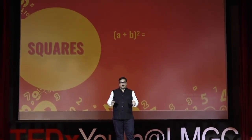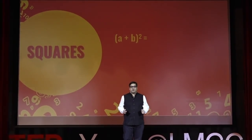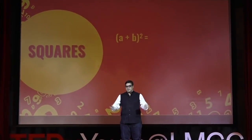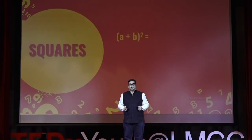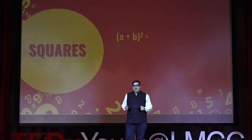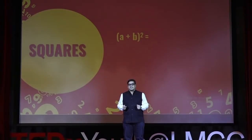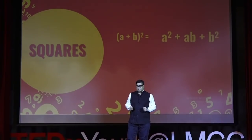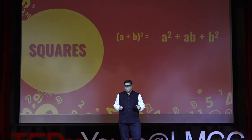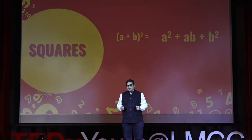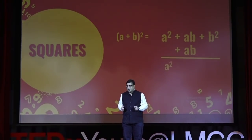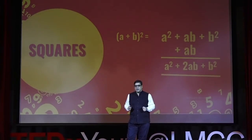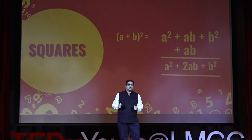Let's begin with squares — a perspective given by the founder of Vedic Maths, Tirthaji. If you remember the expansion of (a + b)², look at the board behind me: that's a² plus aB plus B², and then aB again, which completes the answer a² + 2aB + B².